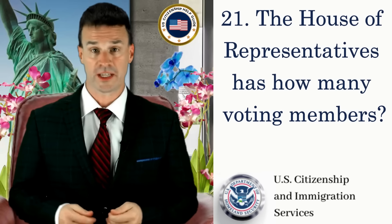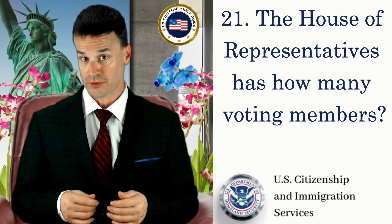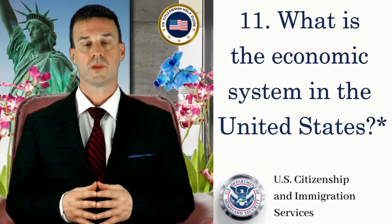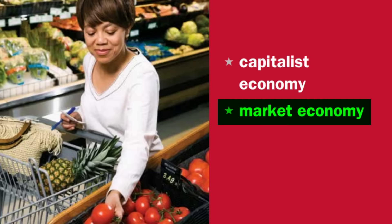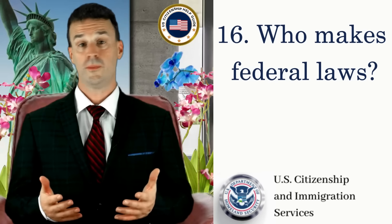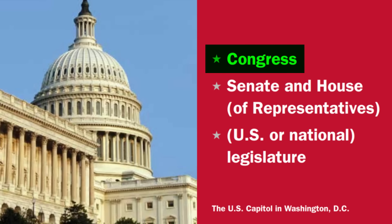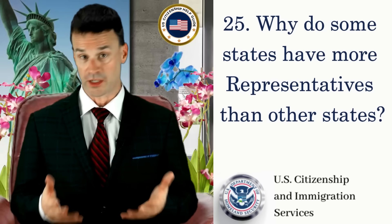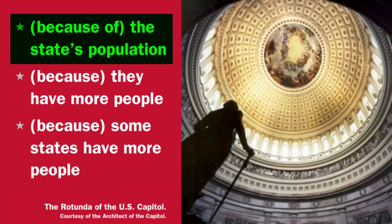The House of Representatives has how many voting members? 435. What is the economic system in the United States? Market economy. Who makes federal laws? Congress. Why do some states have more representatives than other states? Because of the state's population.